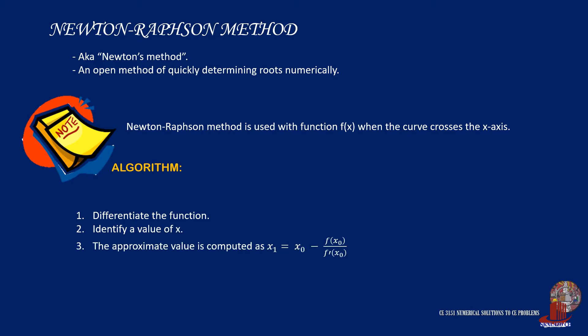There should still be an initial value of x to be assumed, but Newton's method would not require a range. The next value of x will be computed using calculus and it would still utilize iteration.